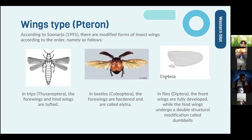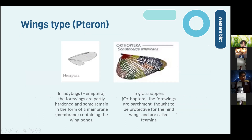Wing types (pteron): according to Borror (1991), there are modified forms of insect wings by order. First, in thrips, the fore and hind wings are fringed. Second, in beetles (Coleoptera), the fore wings are hardened and called elytra. Third, in Diptera (flies), the front wings are fully developed while the hind wings undergo structural modification called halteres. In ladybugs (Hemiptera), the fore wings are partly hardened. In grasshoppers (Orthoptera), the fore wings are parchment-like and protective for the hind wings, called tegmina.